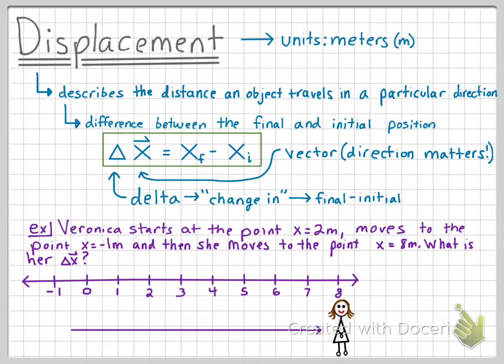Now let's look at our displacement equation. It is important to note that when calculating the displacement, we only care about the final and initial positions. Veronica ended at the point 8 meters and began at the point 2 meters. We do not care that she traveled all the way to the point negative 1 meter. We only care about the final and initial positions.